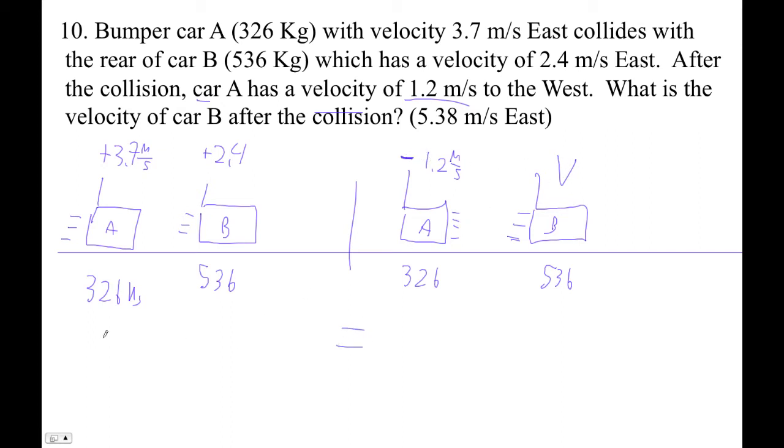So now we're set. 326 times positive 3.7 plus 536 times positive 2.4 equals 326 times... Oh whoops, it's not a V, it's negative 1.2. And then this guy is 536 times V. I tried to put the variable in there, but we know that velocity is negative 1.2.